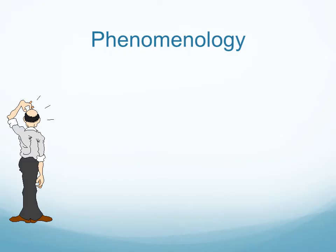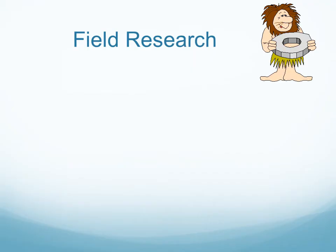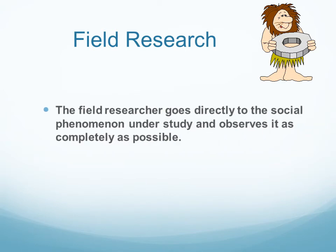Another qualitative tradition is phenomenology — made of the words 'phenomenon' and 'methodology' — a school of thought that emphasizes people's subjective experiences and interpretations of the world. In this methodology, we immerse ourselves in a society to observe problems and conditions from the subject's point of view. It is used in social work and anthropological research where empathy and perspective are key. Field research is where the researcher goes directly into a social phenomenon and observes it as completely as possible, with no controls or experimental conditions.